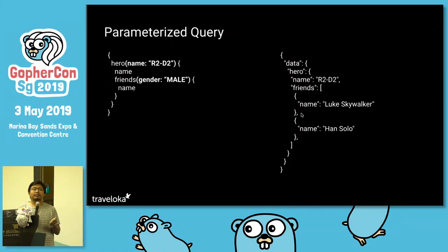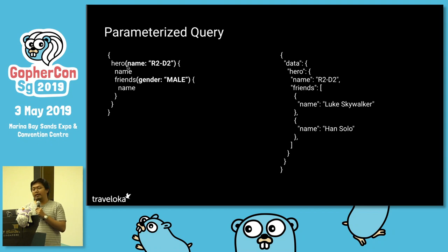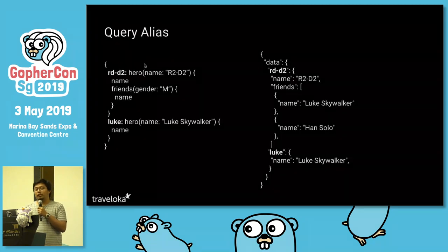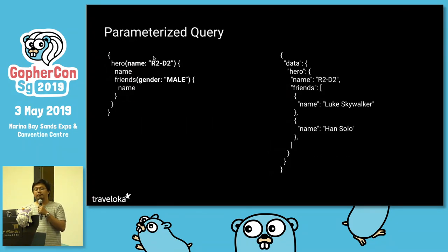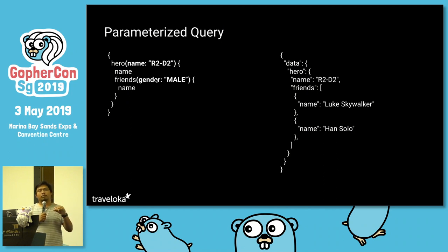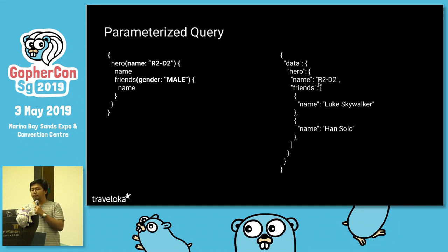Another cool thing about GraphQL is you can parameterize the query. If we want a parameter for hero, we can specify: give me the hero with this name, and give me the friends of that hero who are male. So I can specify filters down to a particular level of data — in this case filtering the hero by name and filtering its friends by gender. What I get is the hero, the name, and all the male friends of R2-D2.